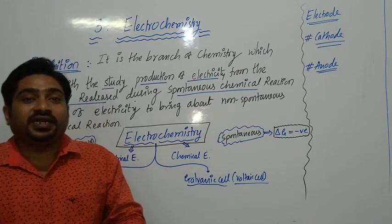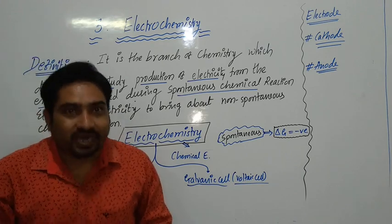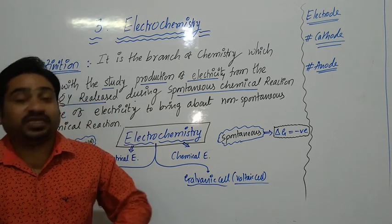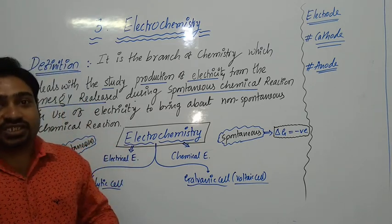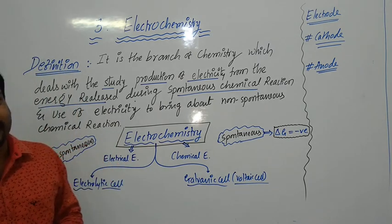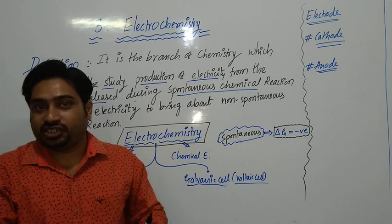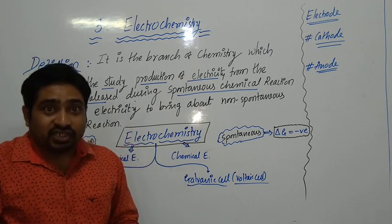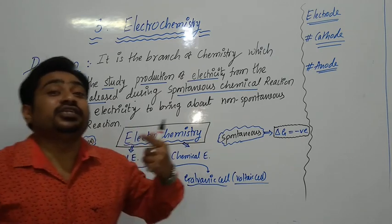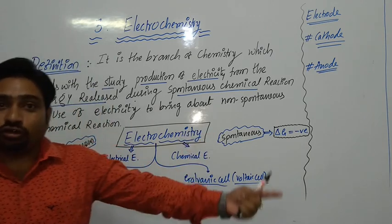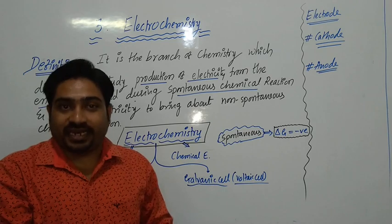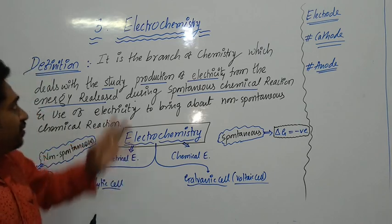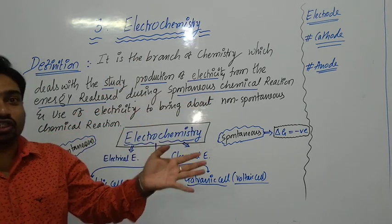A spontaneous chemical reaction is a chemical reaction which takes place on its own. When a spontaneous chemical reaction takes place, some amount of energy is released. That released energy is called Gibbs free energy. So that released Gibbs energy can be converted into electrical energy. This is the production of electricity by using the Gibbs free energy, or the energy released in a spontaneous chemical reaction.